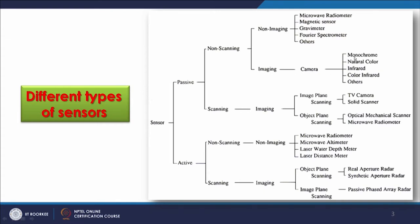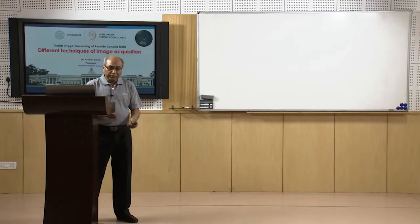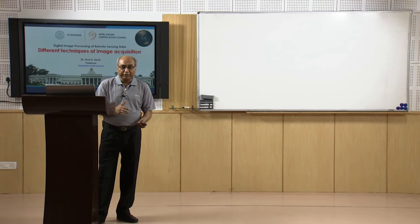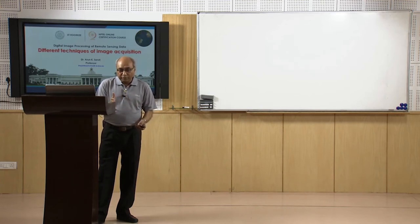With such cameras we can cover monochrome — black and white images — natural color, infrared, color infrared, and other possibilities. These non-scanning sensors take a snapshot. A good example is the flatbed desktop scanner where you put a sheet of paper and scan it line by line — that is what we call scanning.